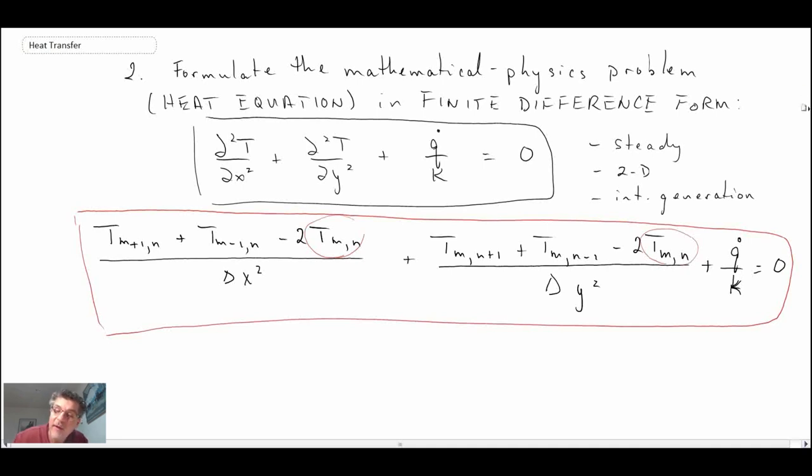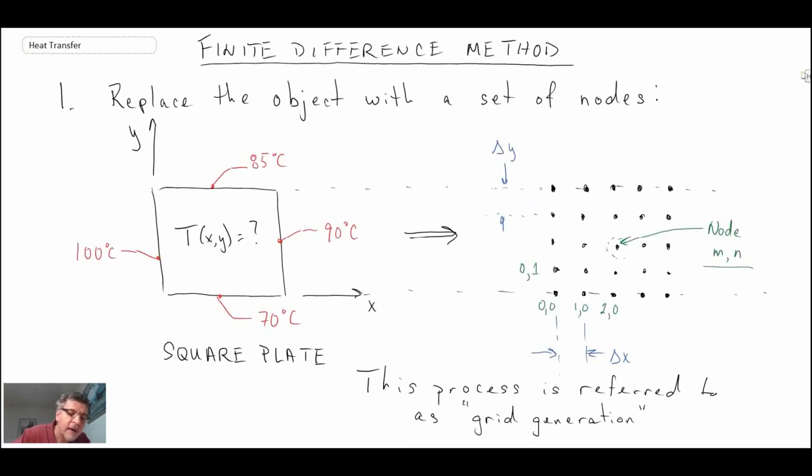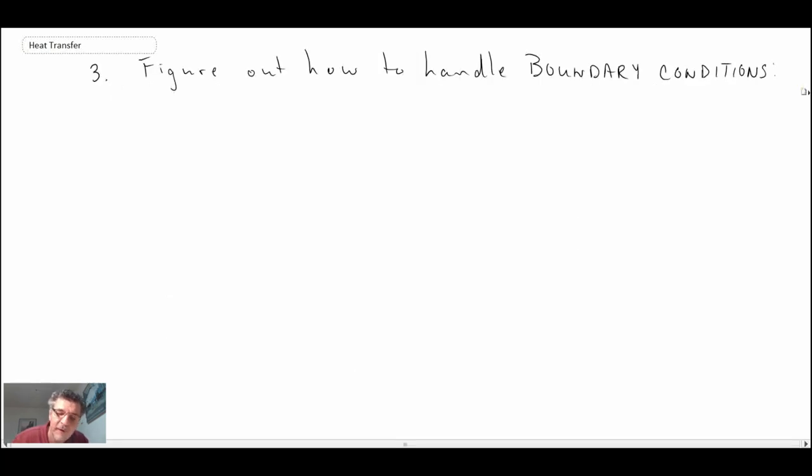The third step is to figure out how to handle your boundary conditions. Looking back at the plate that we are trying to solve, our boundary conditions are here. We can see what is specified for this particular problem is a specific temperature along each of the walls of the plate.